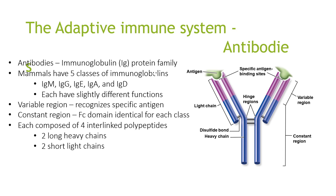Antibodies are our immunoglobulin protein family and there are five types: IgM, IgG, IgE, IgA, and IgD — each with slightly different functions. They all have a variable region which recognises specific antigen, and a constant region or Fc domain which is identical for each class. Each antibody is composed of four interlinked polypeptides: two long heavy chains and two short light chains.